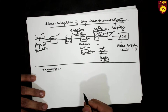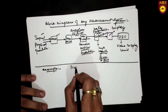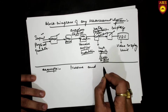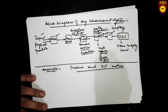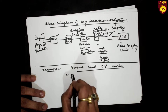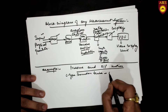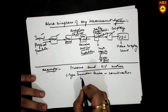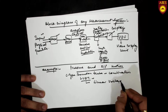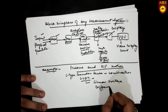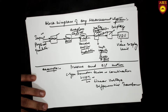Let us take an example of a physical system which is a combination of pressure, where the output should be in the form of motion. The example is a C-type Bourdon tube in combination with an LVDT. LVDT stands for Linear Voltage Differential Transformer. This is the combination we will use to correlate with the block diagram.